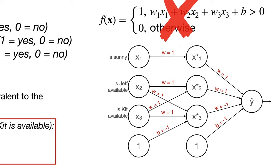Let's see how my perceptron network works. Firstly, recognize that this x-star 1 node only fires if it's sunny. This x-star 2 node only fires if Jeff or Kit are available. And this x-star 3 node only fires if Jeff and Kit are available. Lastly, if you focus on the output perceptron, it should be clear that it only outputs 1 if it's sunny and Jeff or Kit is available, but not both of them.